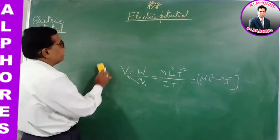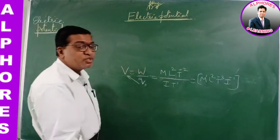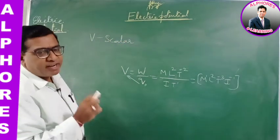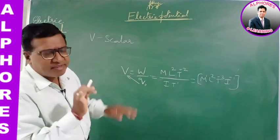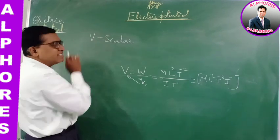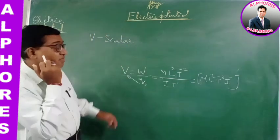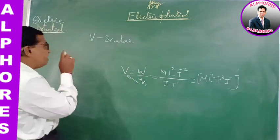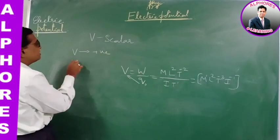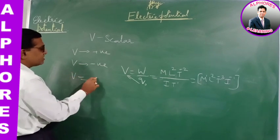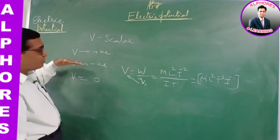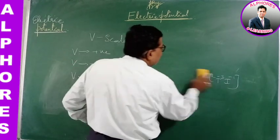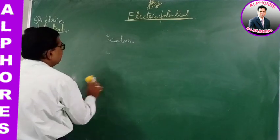Electric potential is a scalar quantity — it has no direction. Potential V is a scalar: it has only magnitude and no direction. It is a mere number with a unit. However, even though it is a scalar, potential can be positive, negative, or zero.